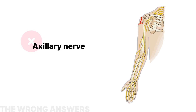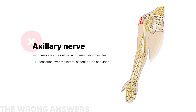The axillary nerve innervates the deltoid and teres minor muscles and provides sensation over the lateral aspect of the shoulder. It doesn't contribute to elbow flexion or forearm supination.